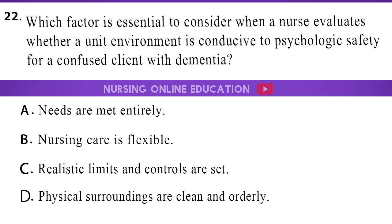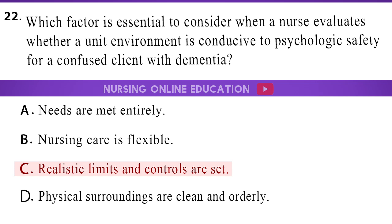Question 22. Which factor is essential to consider when a nurse evaluates whether a unit environment is conducive to psychological safety for a confused client with dementia? A. Needs are met entirely. B. Nursing care is flexible. C. Realistic limits and controls are set. D. Physical surroundings are clean and orderly. The answer is option C: Realistic limits and controls are set.